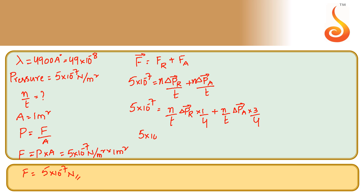So, 5 × 10⁻⁷ equals n/t times: the change in momentum due to reflection, which is 2h/λ, multiplied by 1/4, plus the change in momentum due to absorption, which is h/λ, multiplied by 3/4.